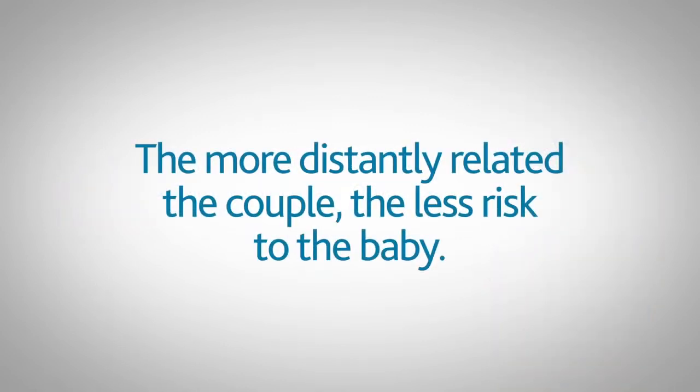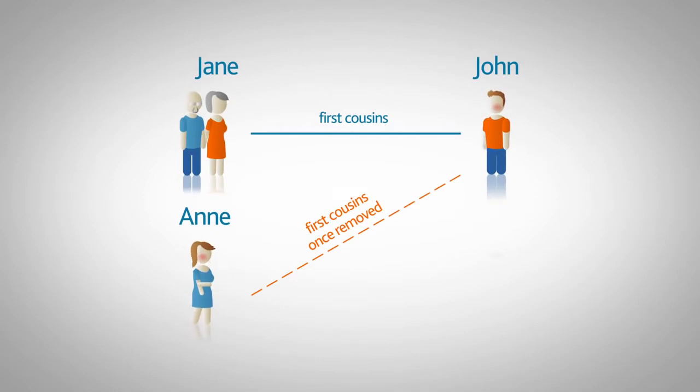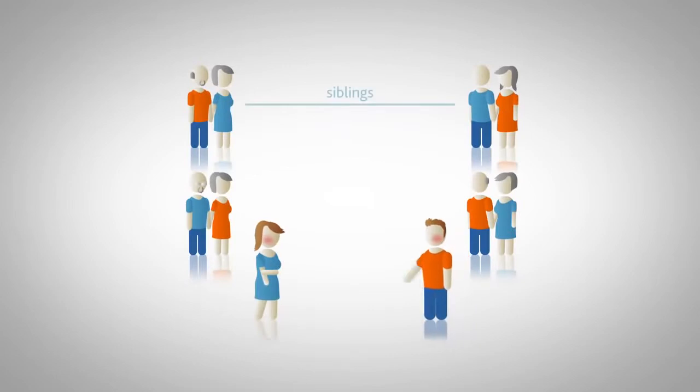The more distantly related the couple, the less risk to the baby. Here, Anne and John are shown as being first cousins once removed. The risk to children of first cousins once removed is 3.5 to 4%.